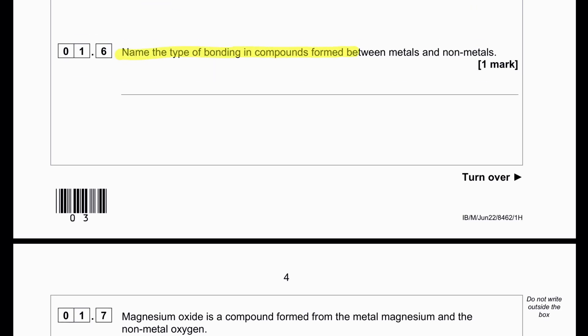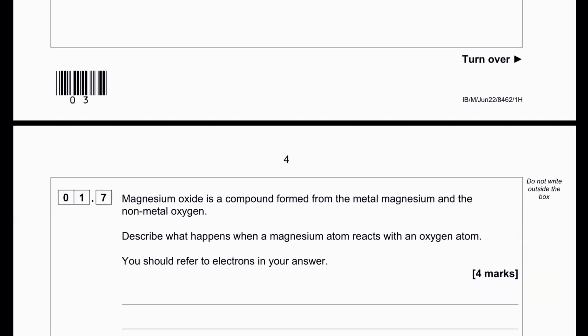Name the type of bonding in compounds formed between metals and non-metals. Metals and non-metals bond by giving and taking of electrons, so it will be ionic compound.